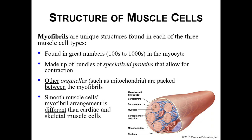You have a ton of myofibrils — hundreds or thousands in every myocyte, and thousands upon thousands of myocytes in every muscle. These myofibrils are full of bundles of specialized proteins that allow for contraction. The components of a myofibril, these specialized proteins, are how we achieve muscle contraction.